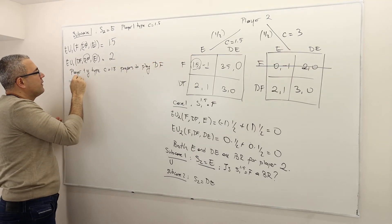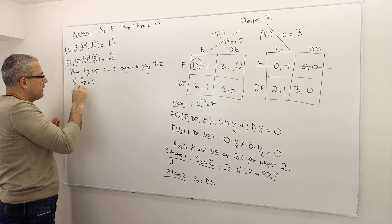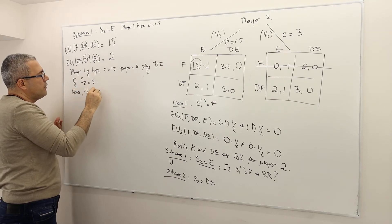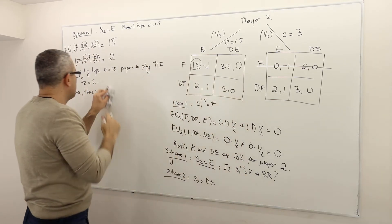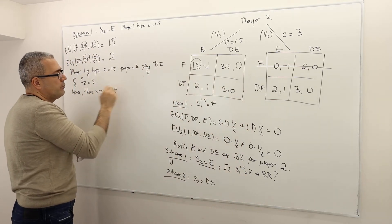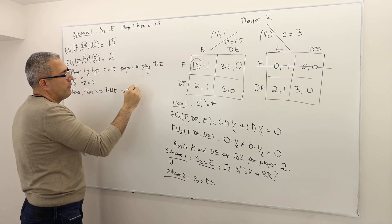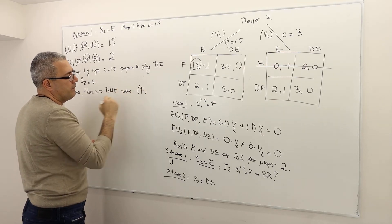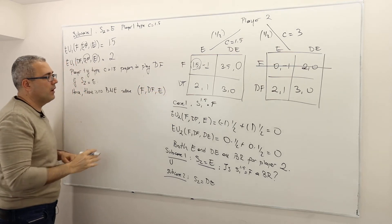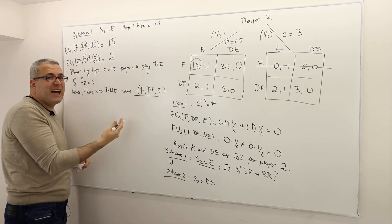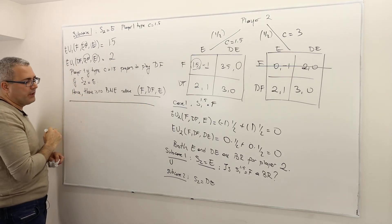Hence, there is no Bayesian-Nash equilibrium of this game where the strategy profile is F, DF, E. So this is not a Bayesian-Nash equilibrium. This is the end of subcase 1.